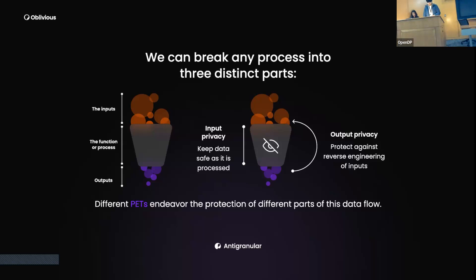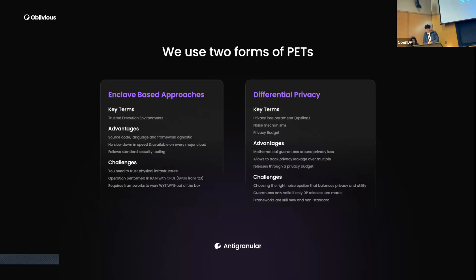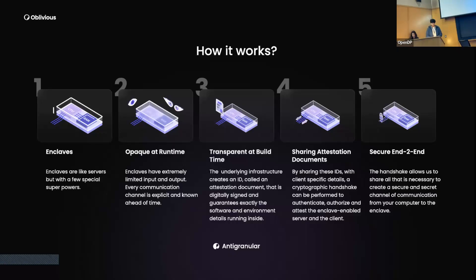For input privacy, we use secure enclaves — trusted execution environments. For output privacy, we use differential privacy. Differential privacy is a mathematical framework ensuring privacy of particular individuals within a dataset. Enclaves are hardware-isolated environments which are tamper-proof, opaque at runtime and transparent at build time, and secure end-to-end, so data is kept private in every step of the execution.